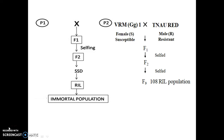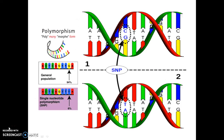The other component in linkage map construction is a suitable marker system. In this experiment, SNP is used, which is a molecular marker. A molecular marker is a DNA sequence in the genome which can be located and identified. As a result of genetic alterations, the base composition at a particular location of the genome differs in different plants. These differences are collectively called polymorphisms and can be mapped and identified.